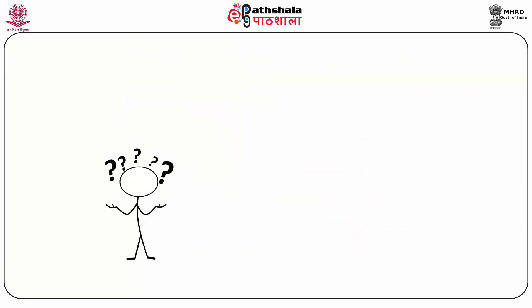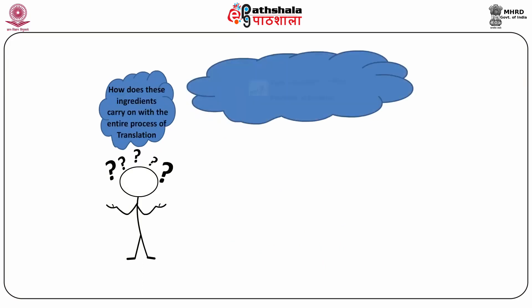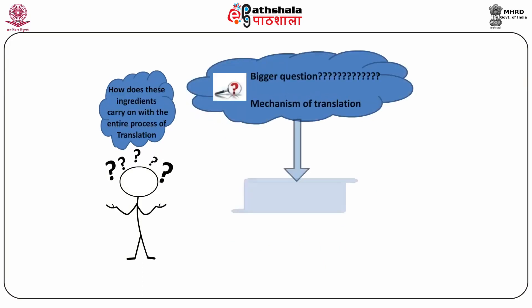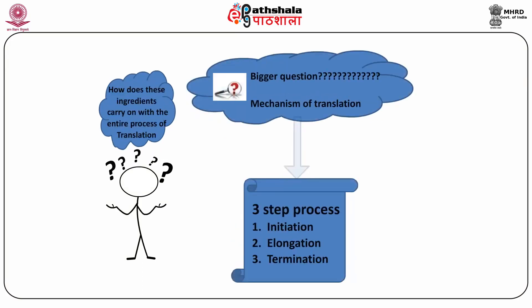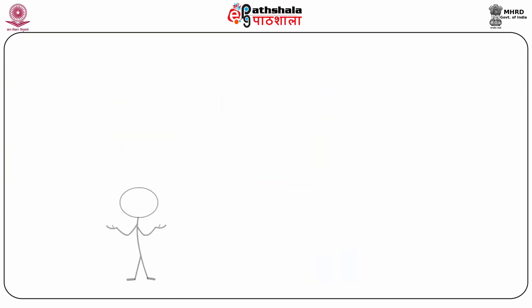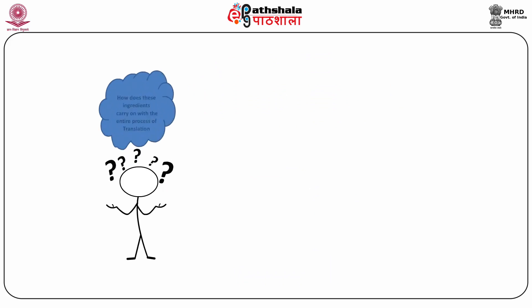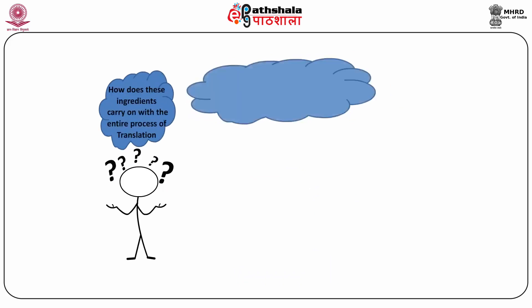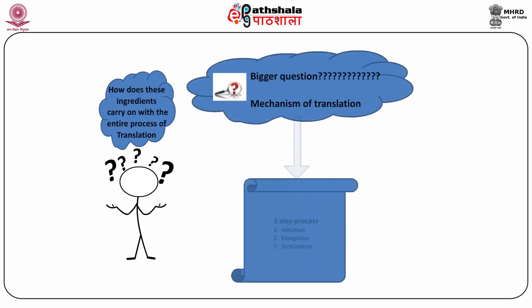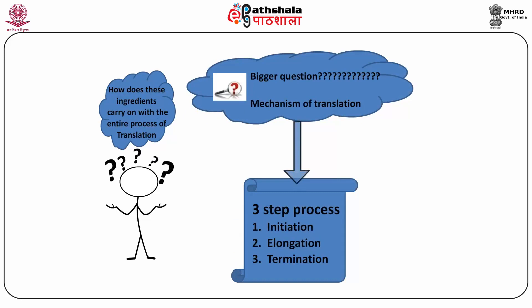How do these ingredients carry out the entire process of translation? The mechanism of translation involves three-step processes: first, initiation; second, elongation; third, termination.